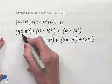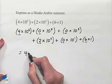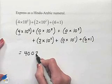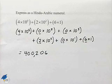Now we can pick up our digits for our Hindu-Arabic numeral. We're going to have 4, 0, 0, 2, 0, 6. That is 400,206.